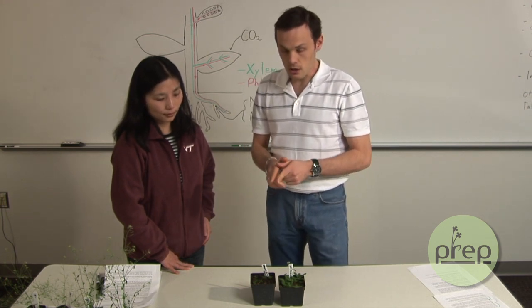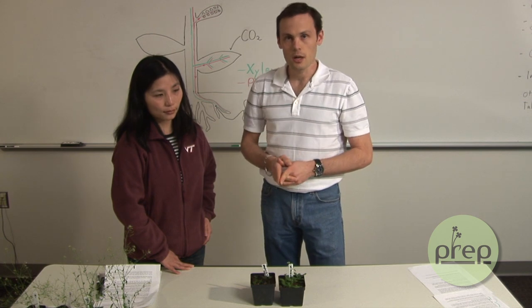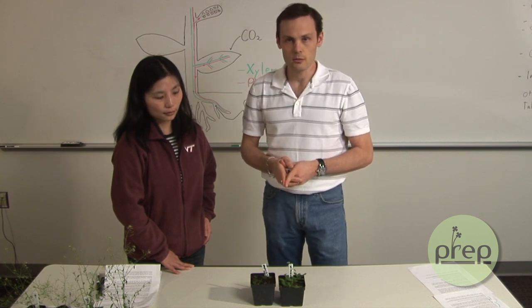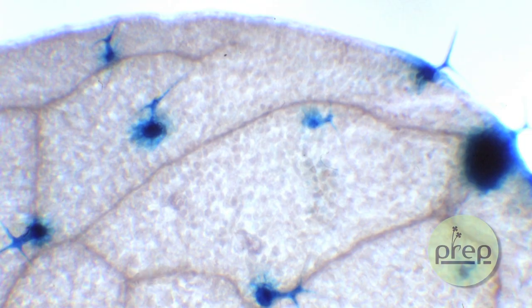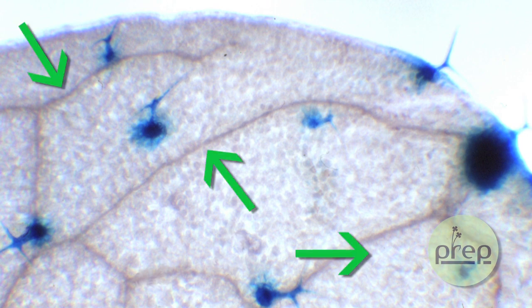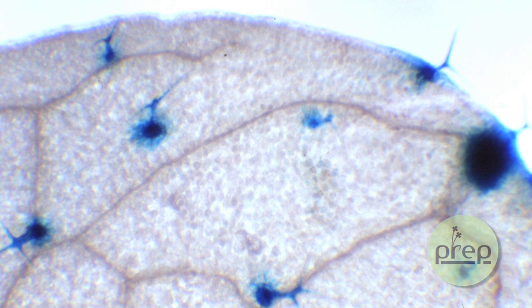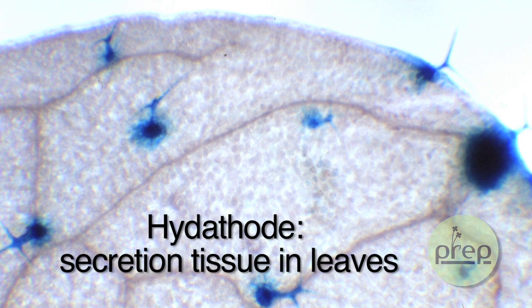But to understand where it comes from, we need to understand a bit better the structure of the plant. So this picture is the leaf of Arabidopsis, where the vascular tissues are in brown here. And they end up at the rim of the leaf in a structure called hydathode stained in blue in this photo.